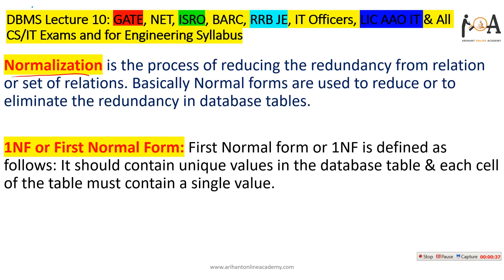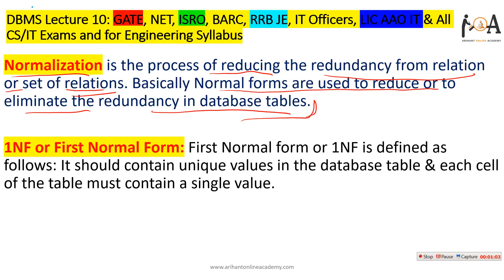We have already discussed the functionality and concept of normalization in earlier lectures — why normalization is necessary and why it is used in database management systems. Basically, it is a process of reducing redundancy from a relation or set of relations. Normal forms are used to reduce or eliminate redundancy in database tables, so that the same data is not repeated, space is reduced, table size is reduced, and the efficiency of the database management system is maintained. Database anomalies — update, insertion, and deletion anomalies — play a very important role in large databases, making normalization very necessary.